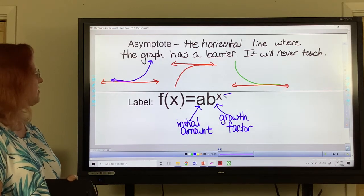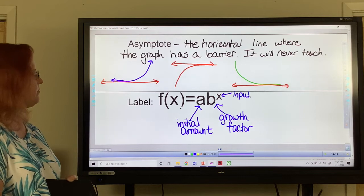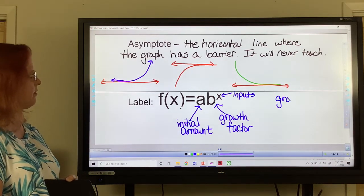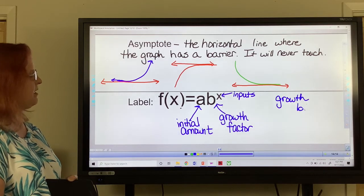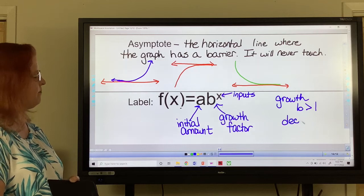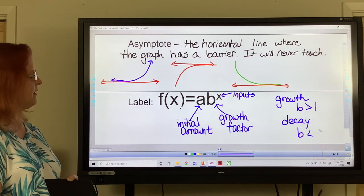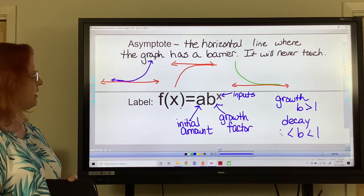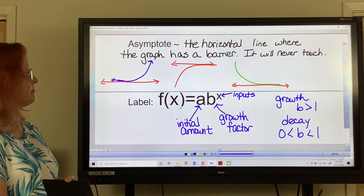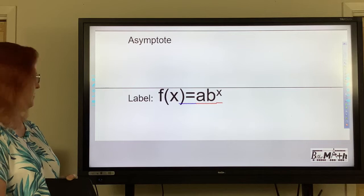Okay. And then the X, of course, is your inputs. And remember, growth is B is greater than one. And decay, B is going to be less than one, but greater than zero. Okay. So that is exponential functions.